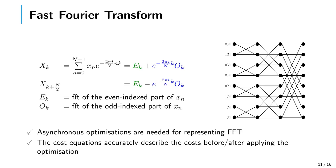Asynchronous optimizations were particularly useful for representing protocols such as the usual butterfly network for a fast Fourier transform. The cost equations describe accurately the cost before and after applying this optimization.